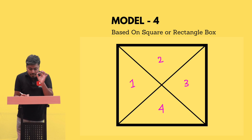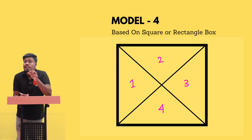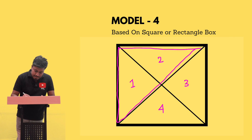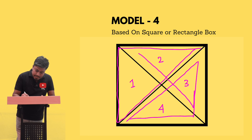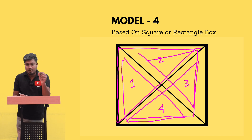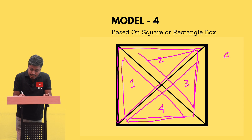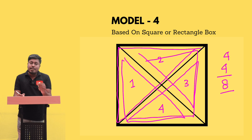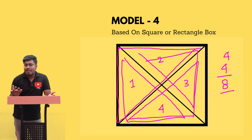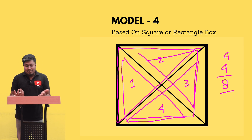Looking carefully at the diagram, you can see another four triangles. This will be one triangle, this will be another, this will be another, and this will be another — so another four triangles. There are already four small triangles plus another four, so four plus four equals eight. Totally, in the given image there are eight triangles.